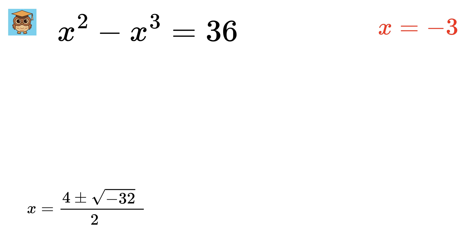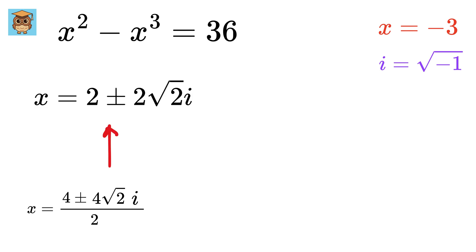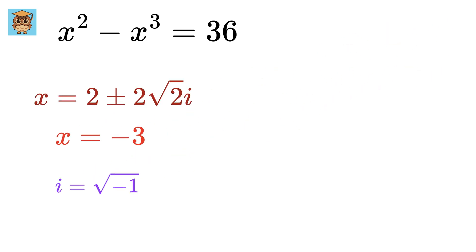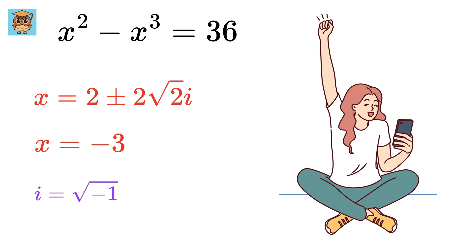This introduces the imaginary term i, since the square root of minus 32 can be written as the square root of minus 1 times the square root of 16 times 2, which equals 4 root 2 times i. So x becomes 4 plus or minus 4 root 2 i, all over 2, giving x equals minus 2 plus or minus 2 root 2 i. This is the solution to our problem — that was amazing!